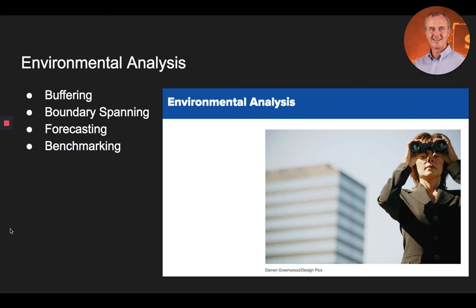Buffering. One of the more traditional methods organizations have utilized to deal with environmental shifts and uncertainty is to create buffering divisions. Buffering occurs when company departments absorb much of the uncertainty from the overall environment so that the organization can perform its primary roles efficiently. Buffering divisions are primarily utilized in manufacturing firms.